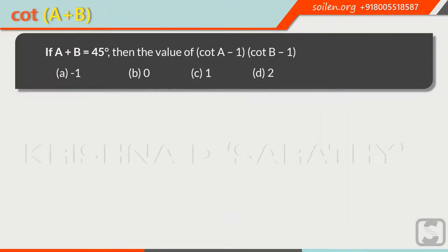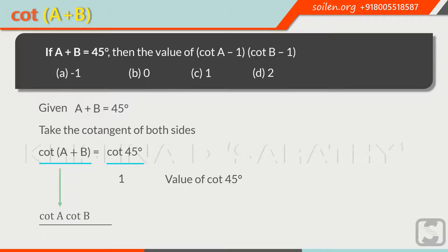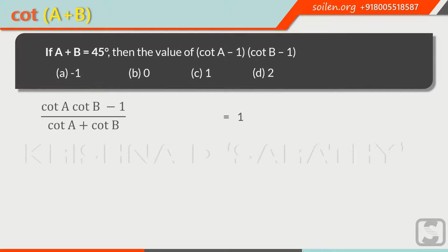Now we will understand our second method to solve this question. It is given that a plus b equals 45 degrees. Take the cotangent of both sides. We can write: cotangent of a plus b equals cotangent of 45 degrees. The value of cotangent of 45 degrees is 1, and on the left side we write down the formula: cotangent of a plus b equals cotangent a times cotangent b minus 1, over cotangent a plus cotangent b. Using cross multiplication, we get: cotangent a times cotangent b minus 1 equals cotangent a plus cotangent b.